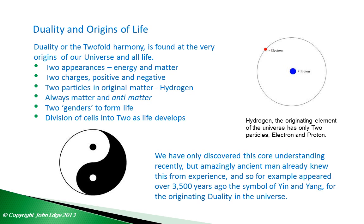When our universe began, almost all the physical matter was hydrogen — there's a bit of helium too, but mostly hydrogen. Even in matter, there's always matter and anti-matter. And when we get to living forms later in our universe's existence, we need two genders for life — masculine and feminine in some form — two different aspects of life that come together to form the next generation.